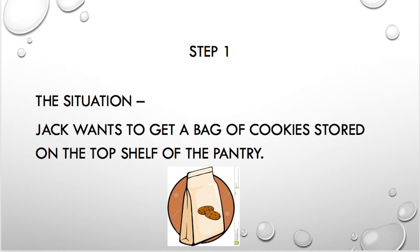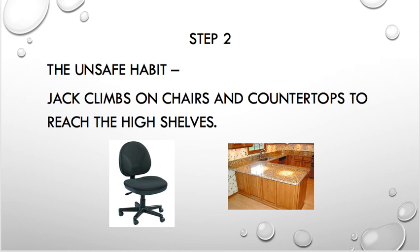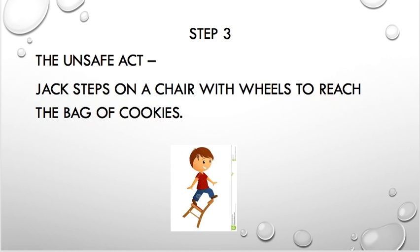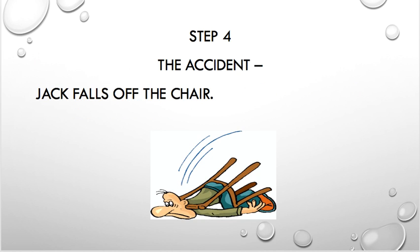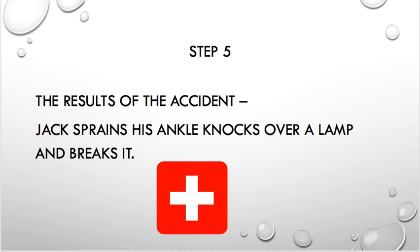Here's a situation: Jack wants to get a bag of cookies stored on the top shelf of the pantry at home. Next, the unsafe habit — Jack climbs on chairs and countertops to reach the high shelves. Then the unsafe act — Jack steps on a chair with wheels to reach the bag of cookies. Then the actual accident — Jack falls off the chair. And finally, the results of the accident — Jack sprains his ankle and he knocks over a lamp and breaks it.